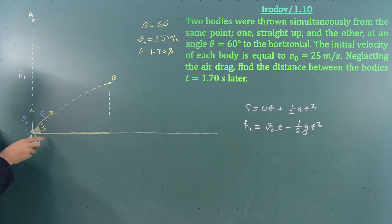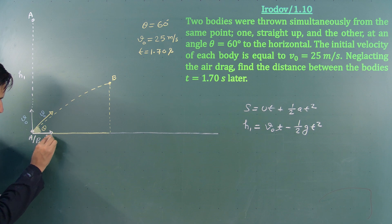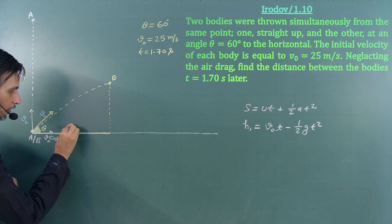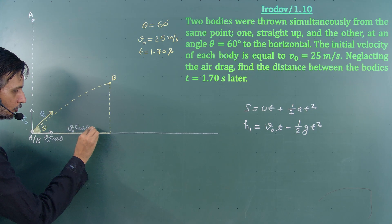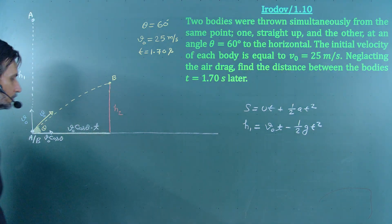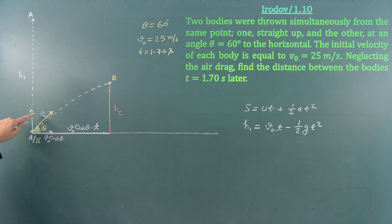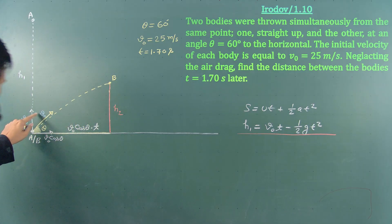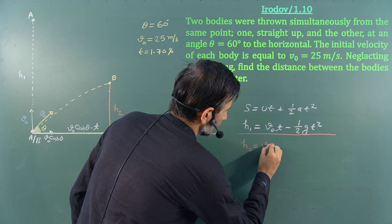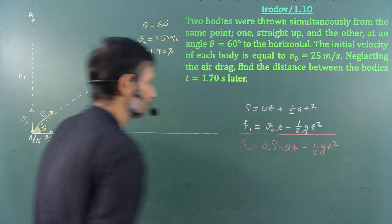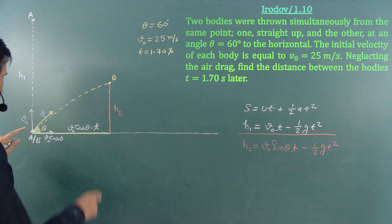To calculate the position of particle B, we break its velocity into components. The horizontal component is v₀cosθ, and since there is no acceleration in the horizontal direction, the horizontal distance is v₀cosθ·t. For the vertical displacement h2, we use the same formula but with v₀sinθ, giving h2 = v₀sinθ·t minus ½g·t².